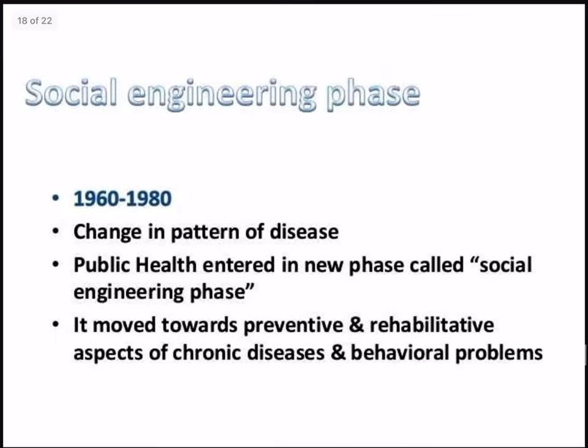The social engineering phase ran from 1960 to 1980. During this phase, a change in the pattern of disease was observed. Public health entered a new phase that moved forward towards the preventive and rehabilitative aspects of chronic disease and behavioral problems.